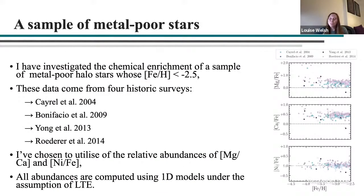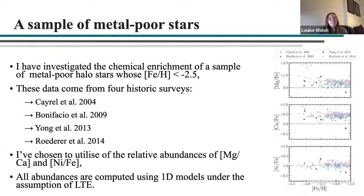Using this model, I've looked at the chemical enrichment of a sample of metal-poor halo stars with iron-to-hydrogen abundances all less than minus 2.5 — at least 300 times more iron-poor than the Sun. The stars come from four historic surveys: two samples from the First Stars series and two more recent surveys from David Yong and Ian Roederer. I chose to analyze the relative abundances of magnesium-to-calcium and nickel-to-iron.